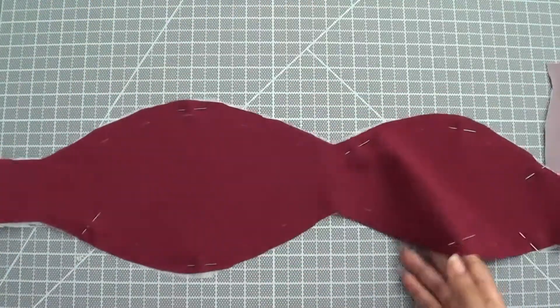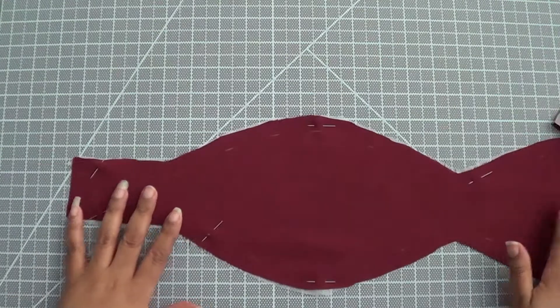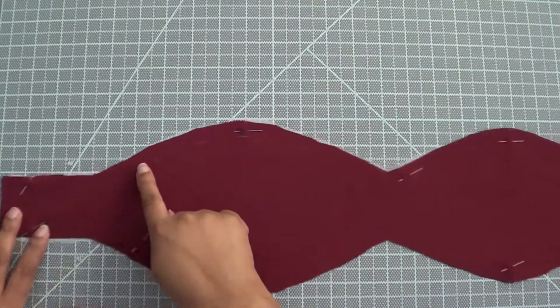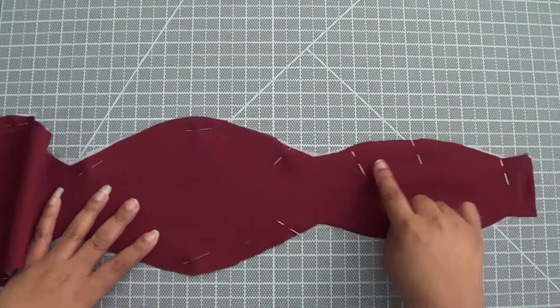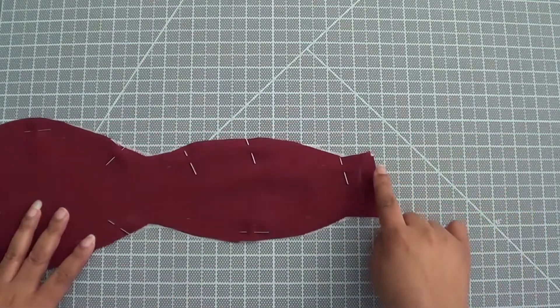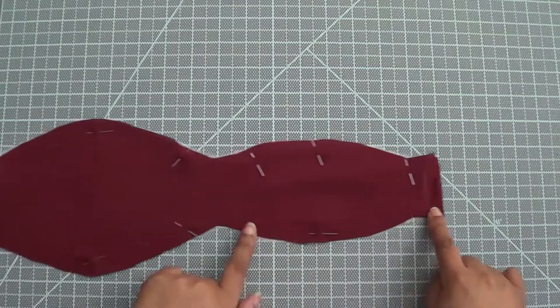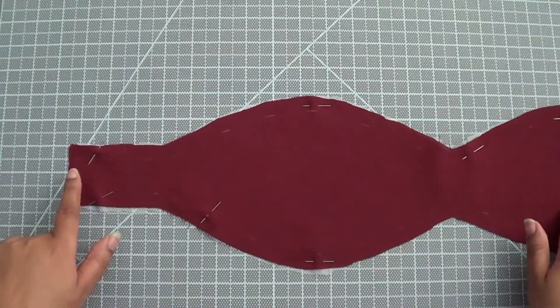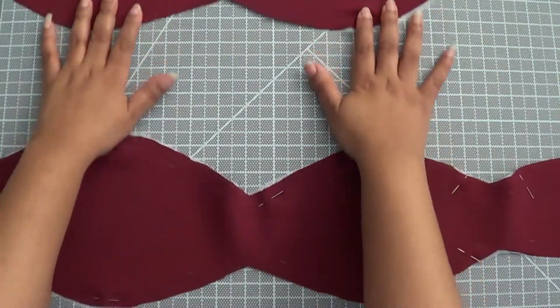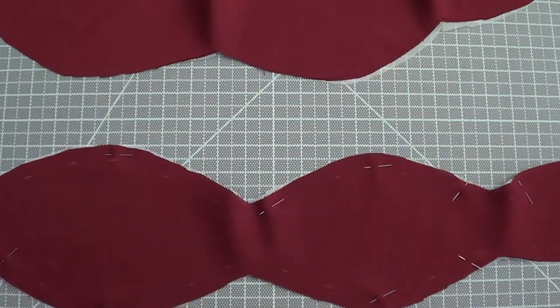This one I have already pinned. So what you're going to do is sew along here, sew all the way down and sew back, and you're going to leave this open. You're going to do that for both pieces. I'm going to go ahead and take care of that.